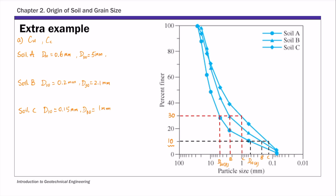The last d value is d60. You start from the y-axis, draw a horizontal line, and find the corresponding d60 values for the three soil samples. For soil A, d60 is about 11 mm. d60 for soil B is about 7 mm. And d60 for soil C is about 4.5 mm.